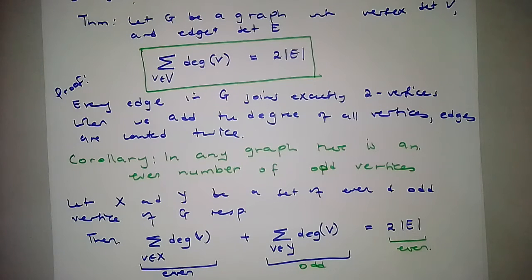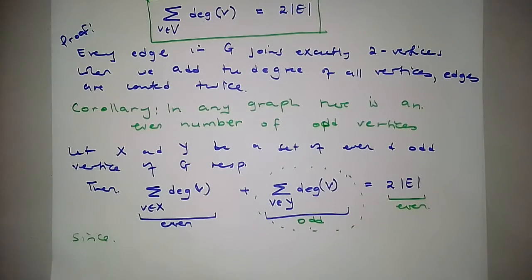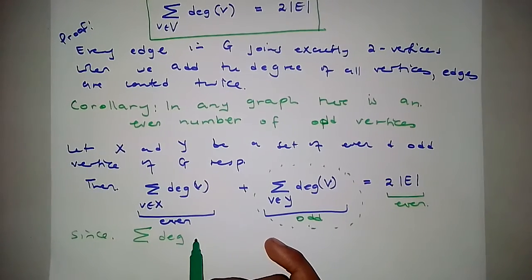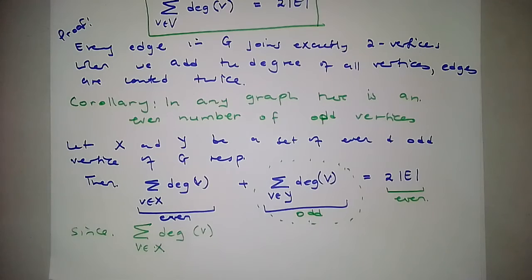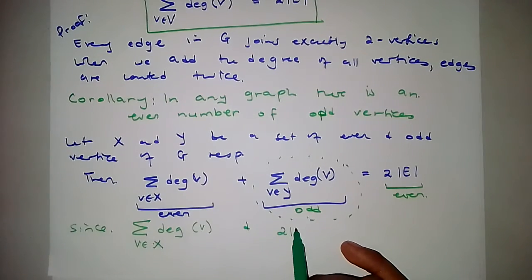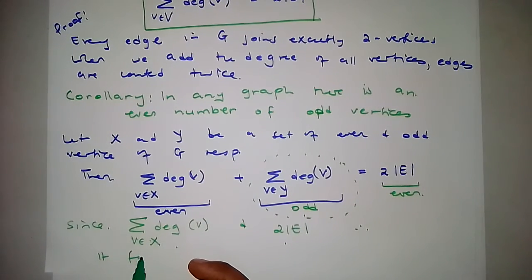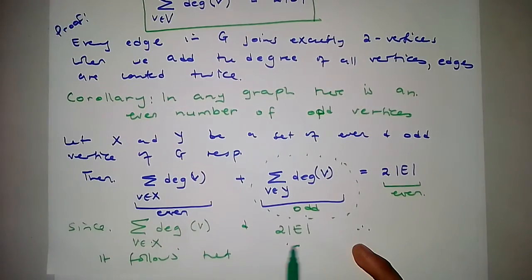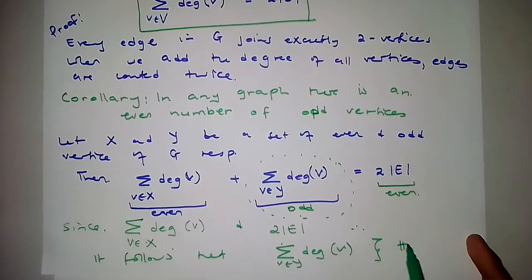Since the sum of the degrees of all odd vertices must be even, and each individual term in Y is odd, it follows that the sum over Y — the degree sum for V an element of Y — must be an even number. This proves that in any graph there is an even number of odd vertices.